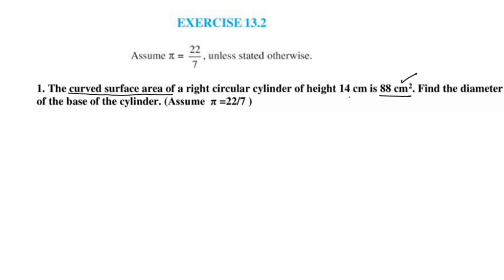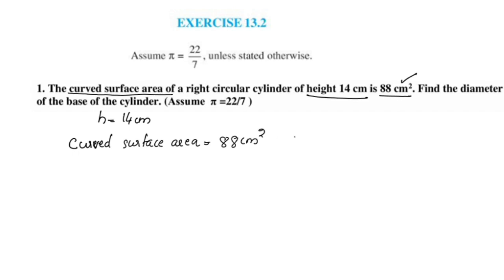The curved surface area is equal to 88 cm². The diameter of the cylinder is D. The curved surface area formula gives us 2πr h equal to 88 cm².